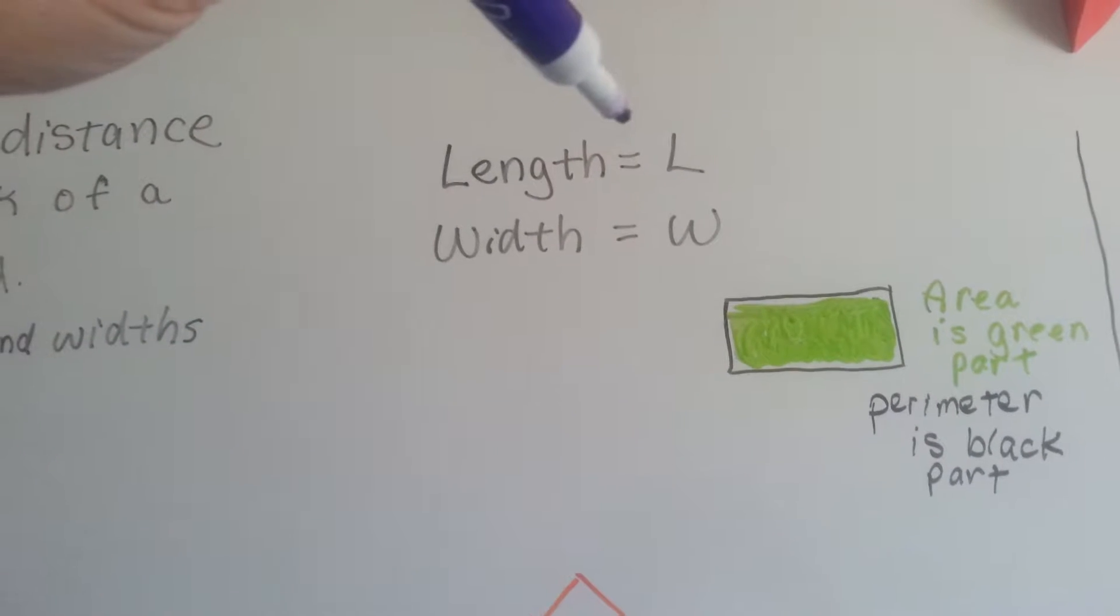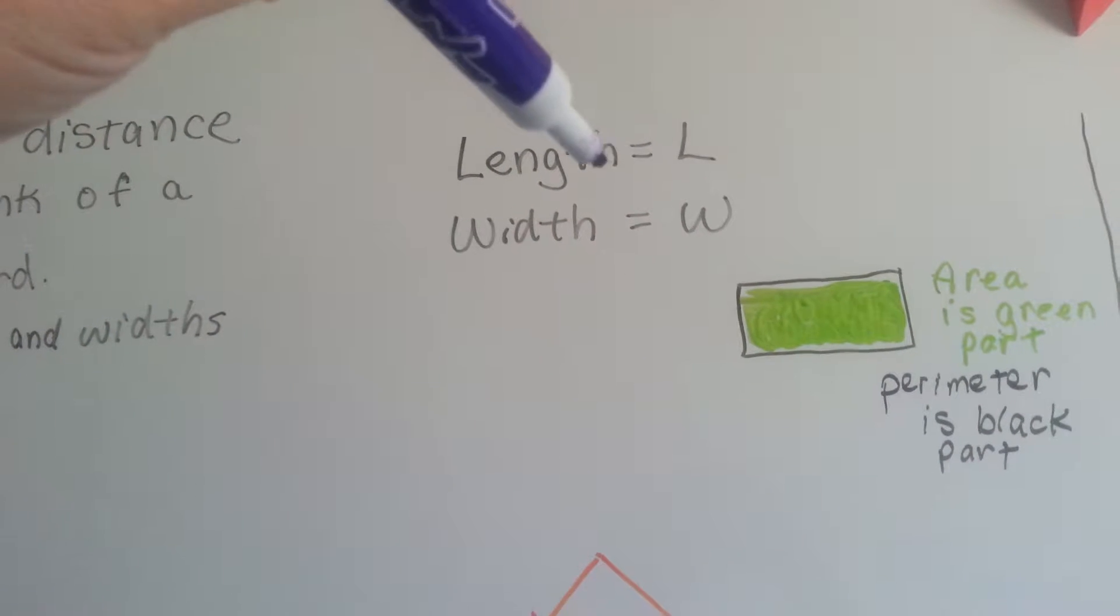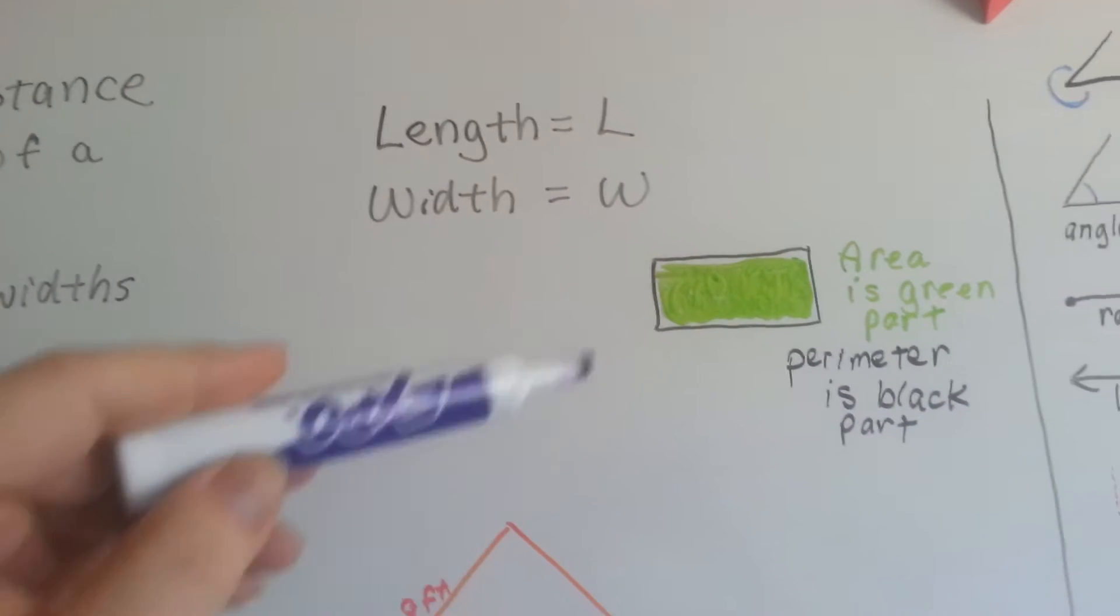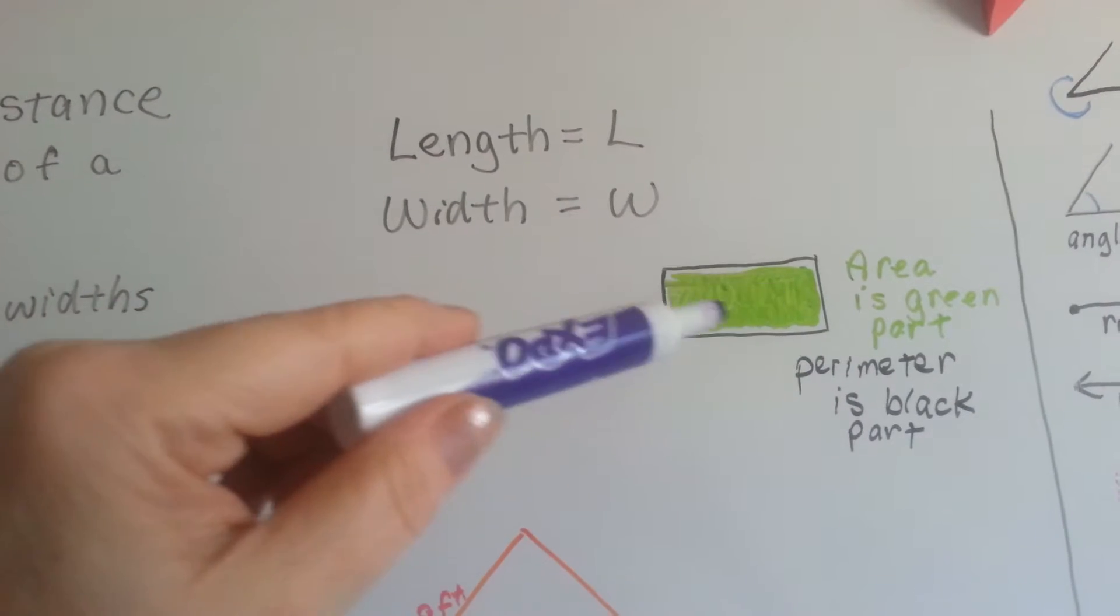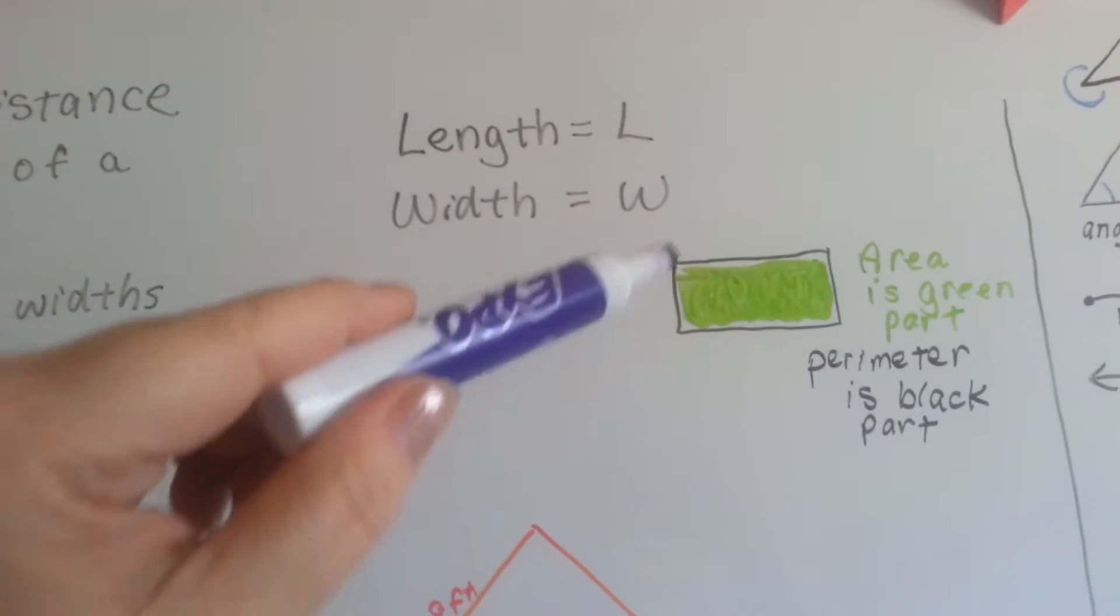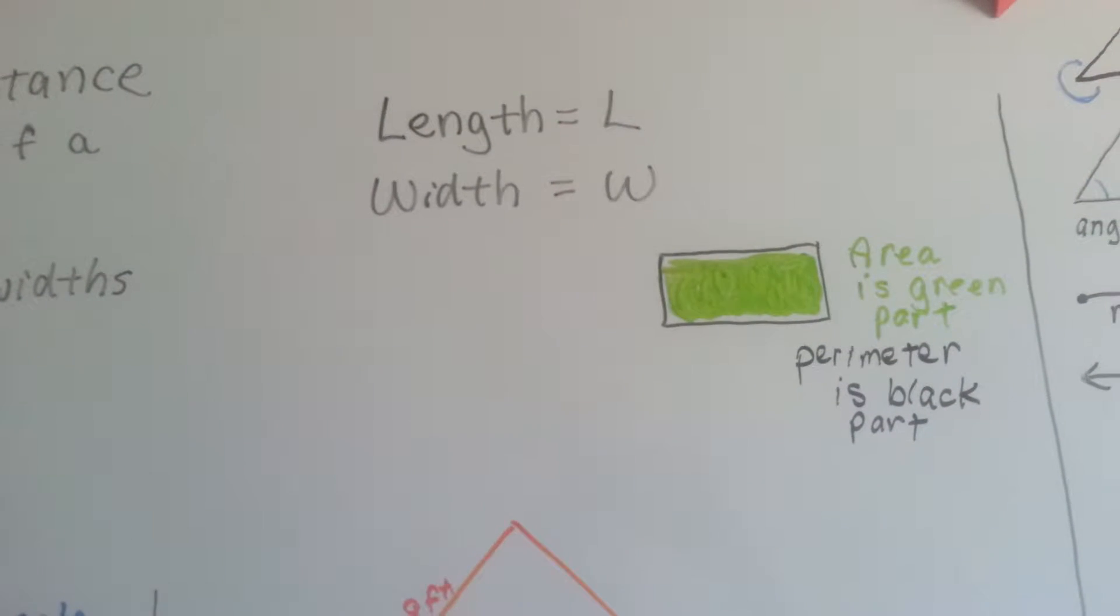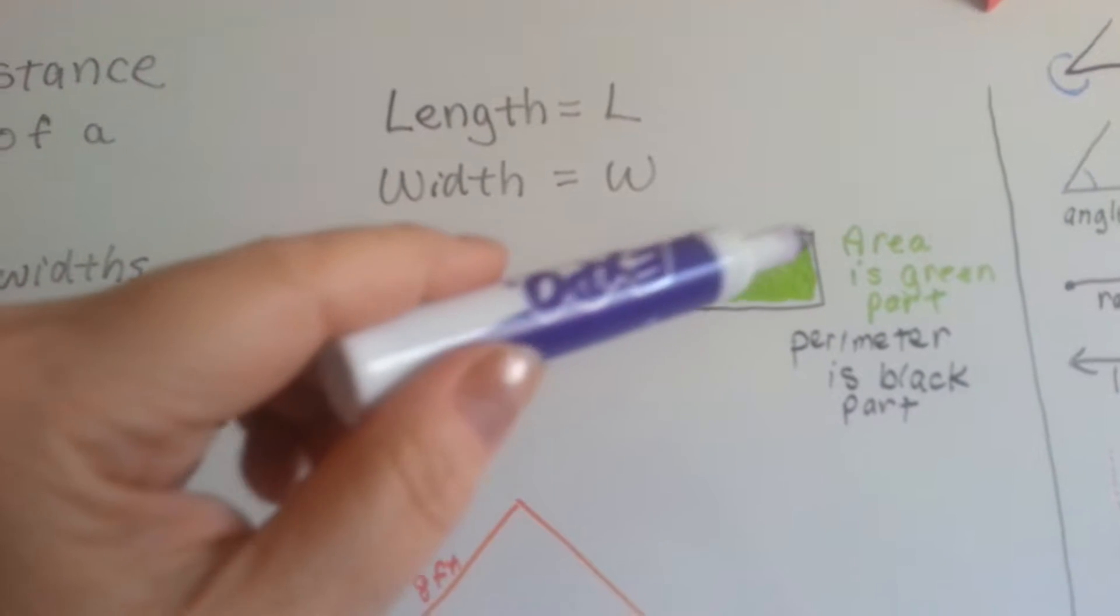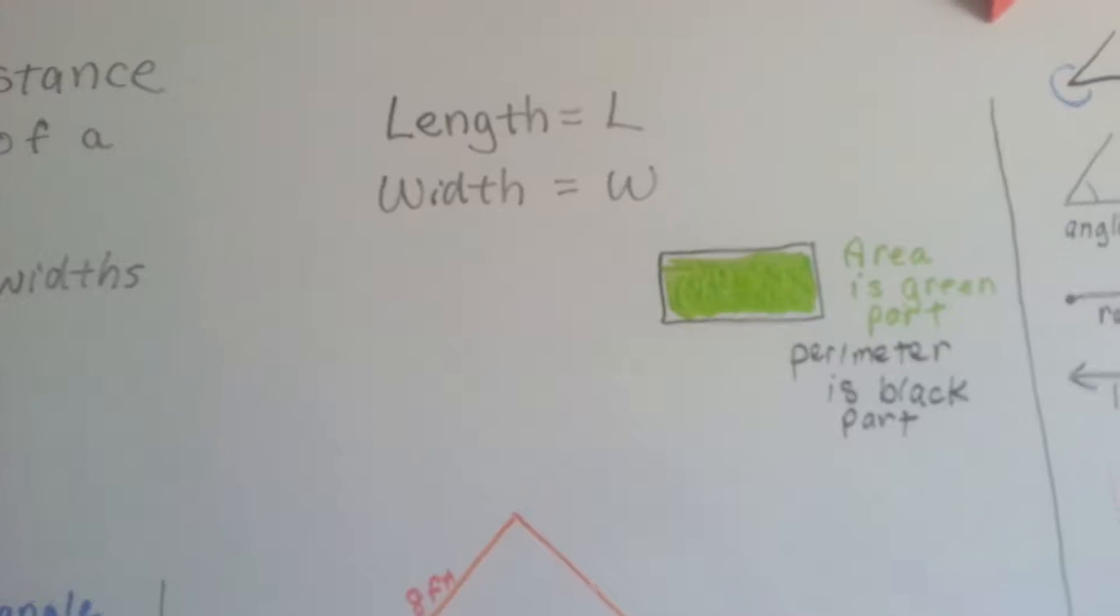Length is represented by an L and width is represented by a W. The green area, see, that's the area. The black part, that's the perimeter. Very different, right? The area fills the inside, the perimeter is the border, the edge around the outside.